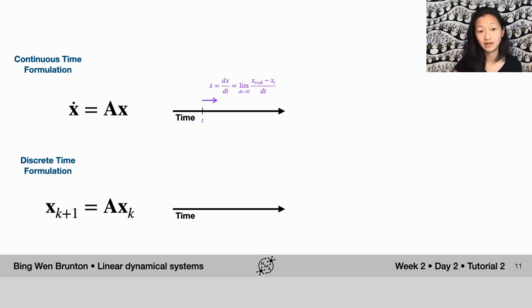In the discrete time formulation, conversely, instead of having that limit, we're just going to take a discrete non-zero delta t, and the A matrix now specifies how do I jump from one time k to the next time k plus 1.